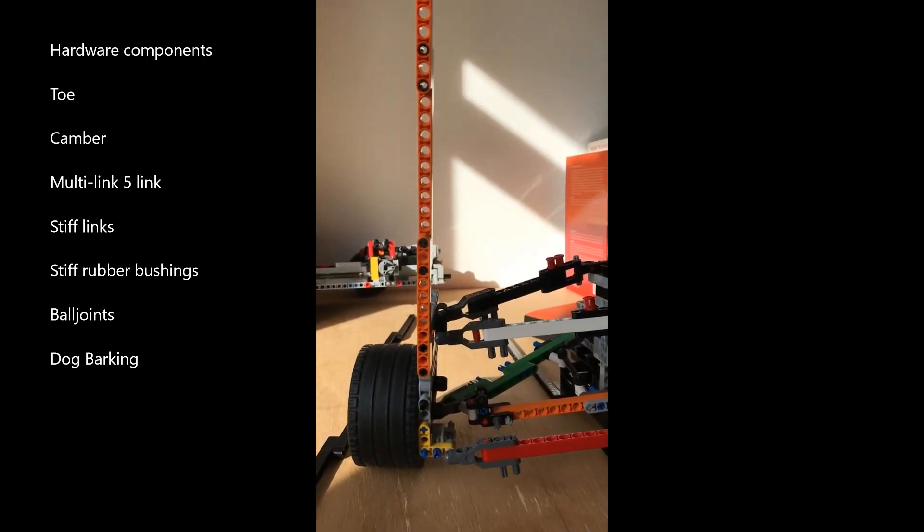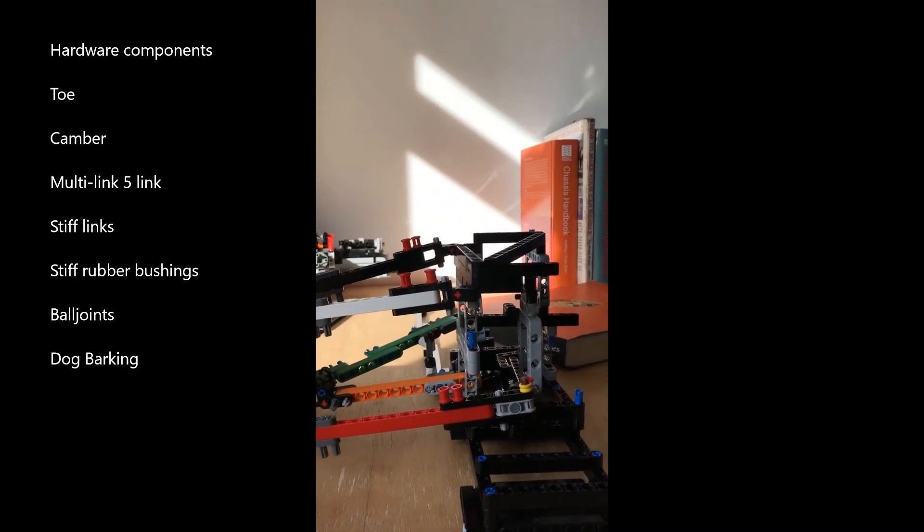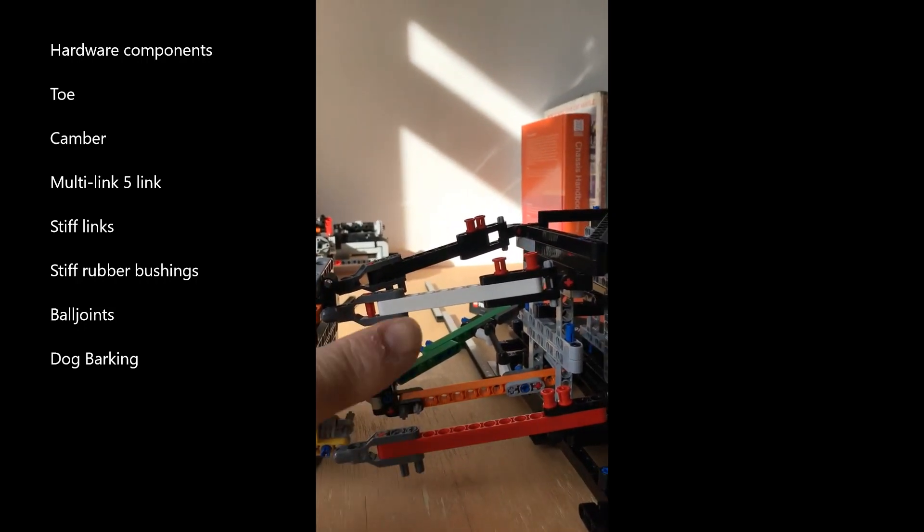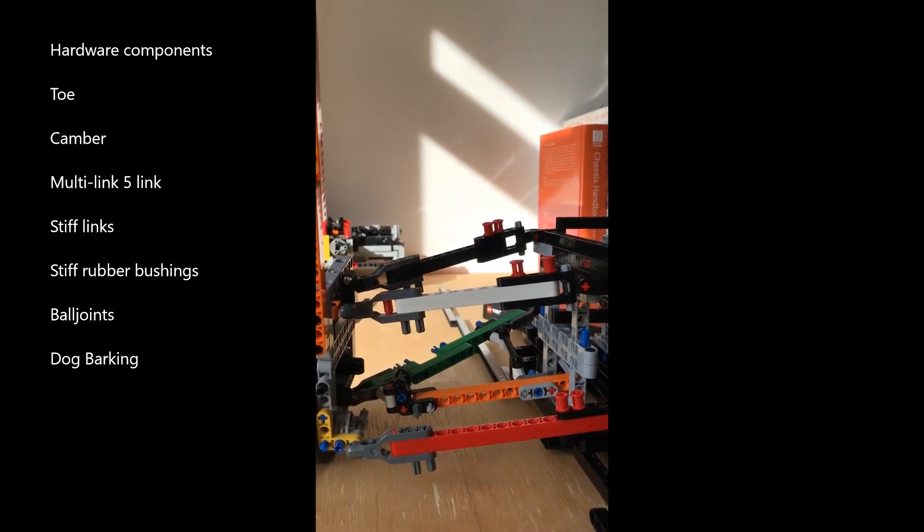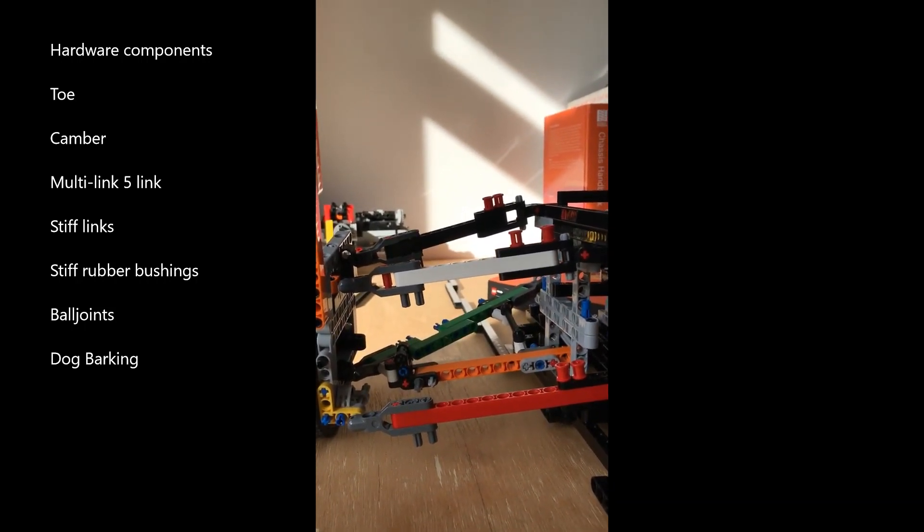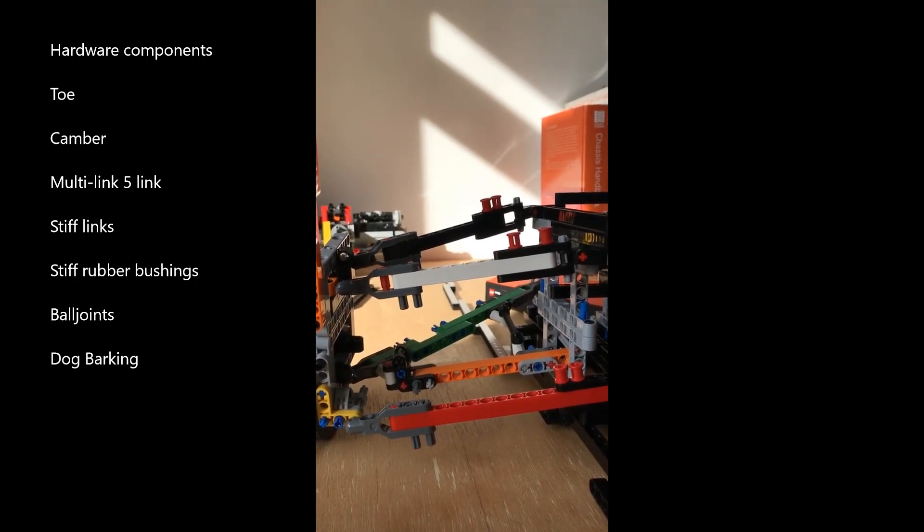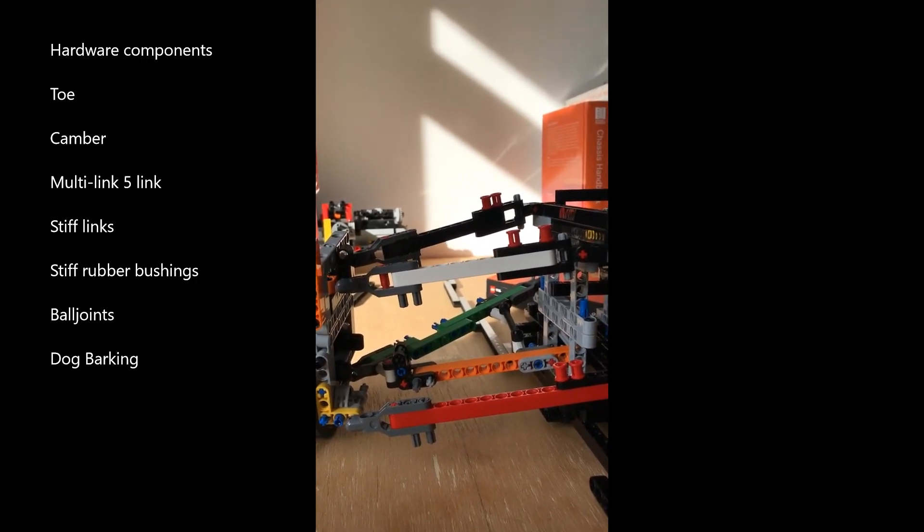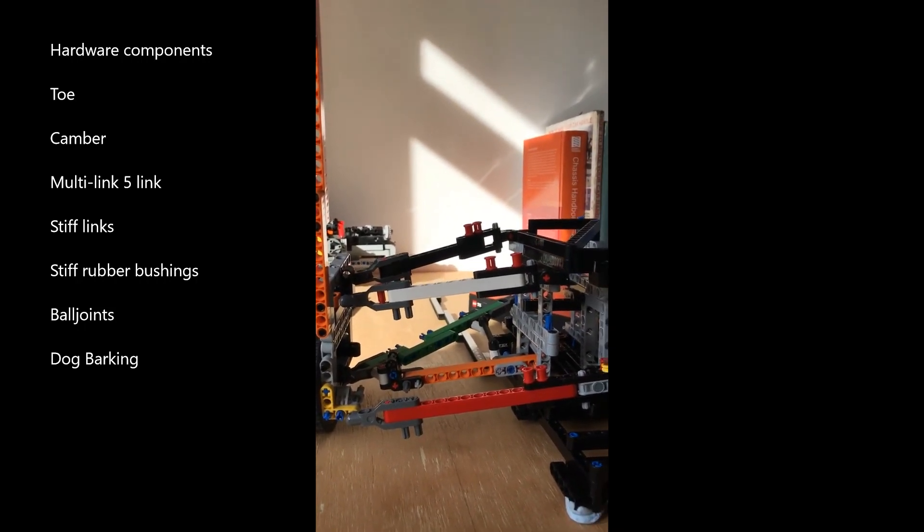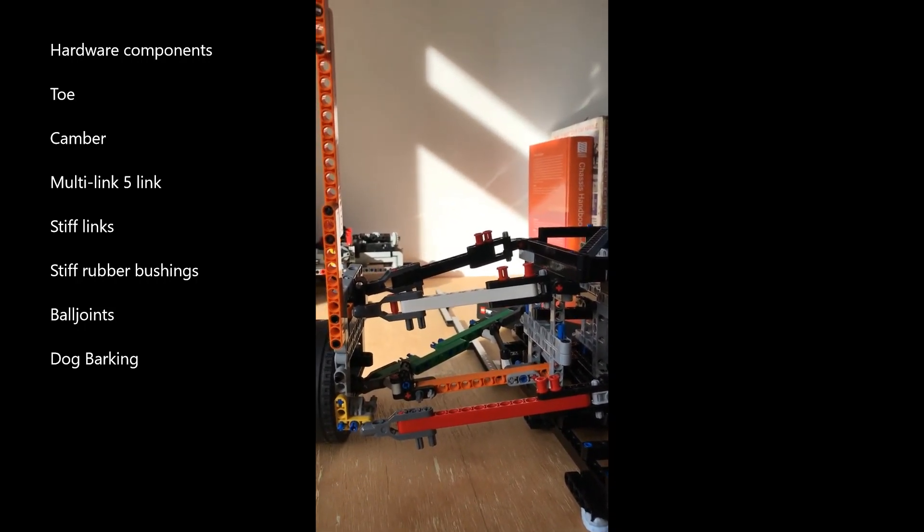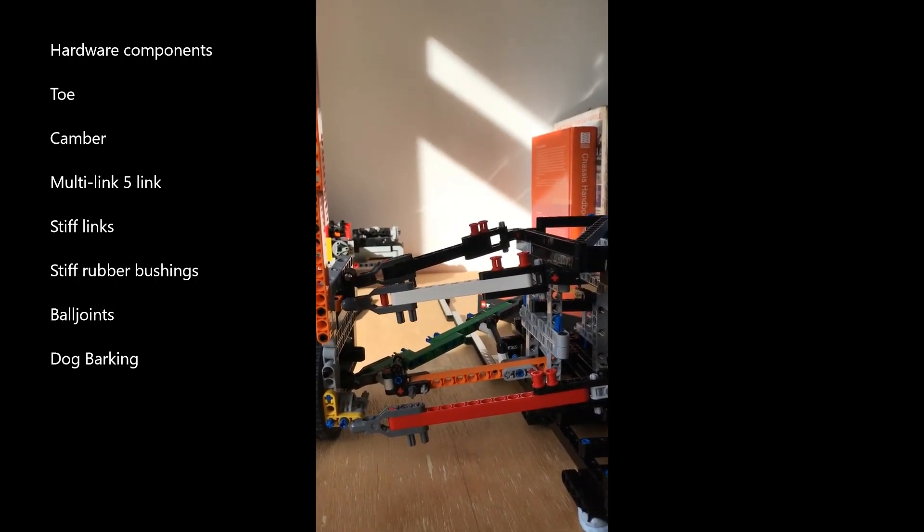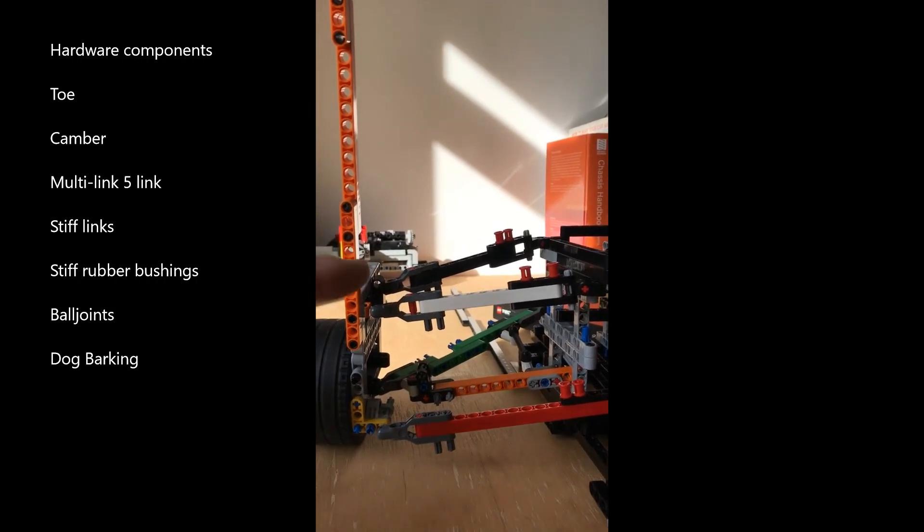Zooming in we have the suspension links in two planes. The upper plane are the two links. This is a five link suspension, so it's the top of the tree. Five link multi-link suspension is used on less than 10% of all rear wheel driven cars, so it's quite special because it's expensive and quite complicated.